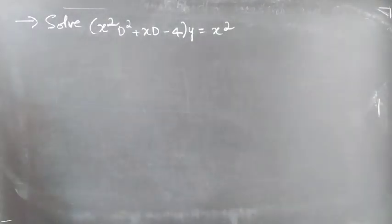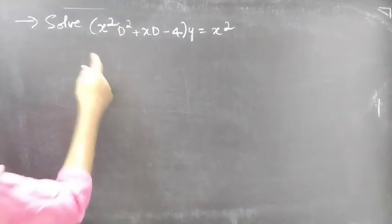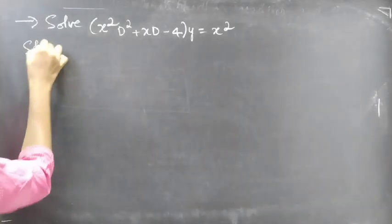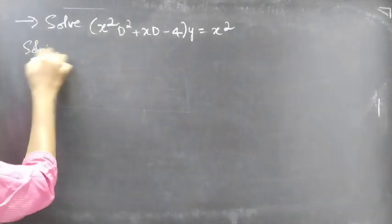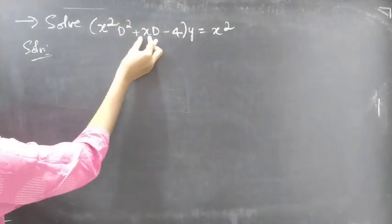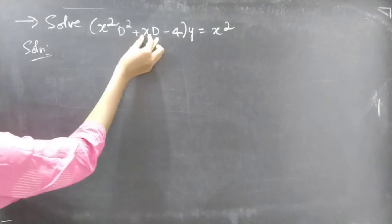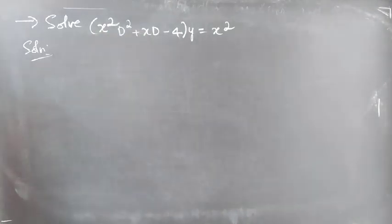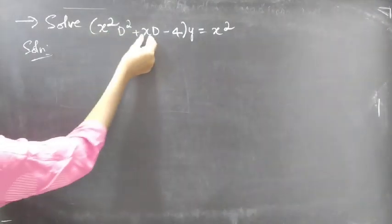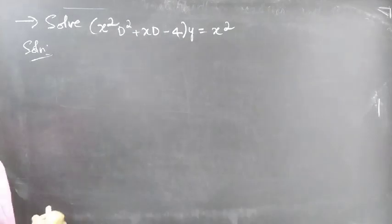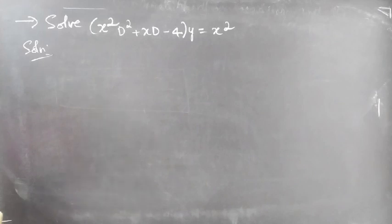So we are given a Cauchy's equation. This equation has variable coefficients. So we are going to reduce this to a differential equation with constant coefficients by making some substitution.